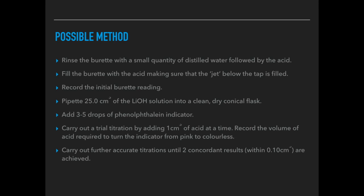Once you've done your trial titration you know roughly how much acid to add. You'd carry out further accurate titrations until you get what's called two concordant results. What we mean by that are results that are close enough together, i.e. within 0.10 cubic centimetres. Once you've got those concordant results you can calculate the average titre of your accurate results. Remember you should never use your trial titration result in any calculation.